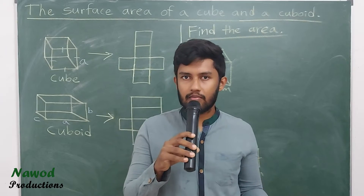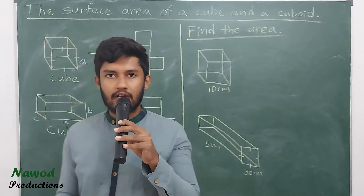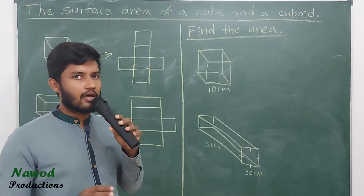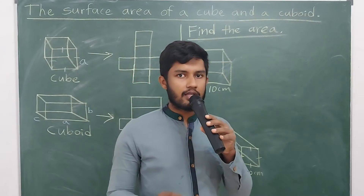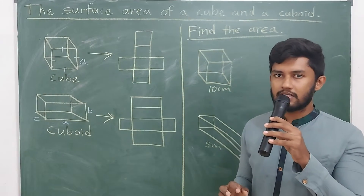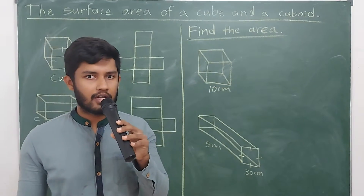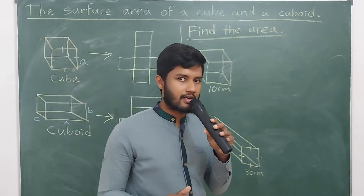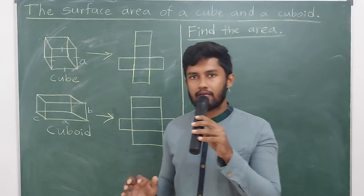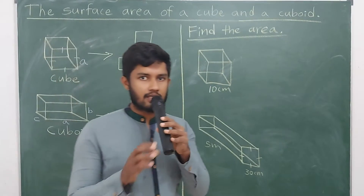When we consider solids, they can be touched from all sides. When considering plane figures, they cannot be touched from all sides — we can see only one surface. Examples of solids include: cube, cuboid, regular tetrahedron, cylinder, and cone.